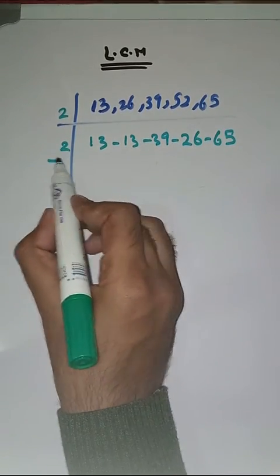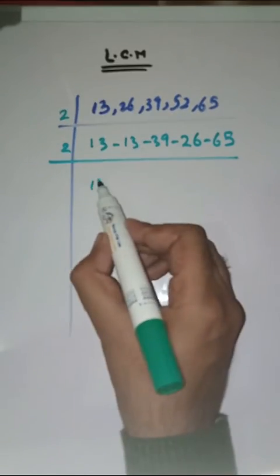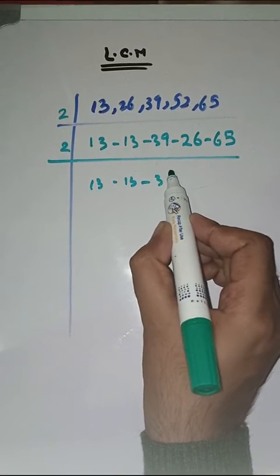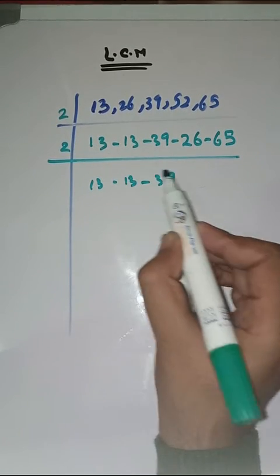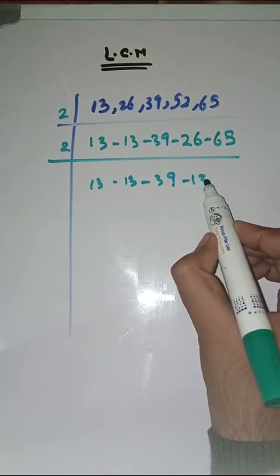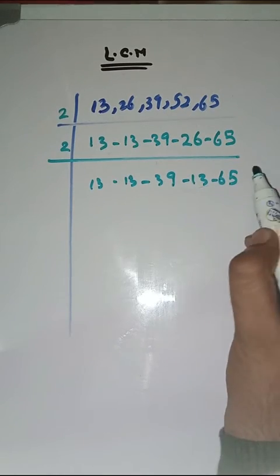Again with 2. 13 as it is. 13 as it is. 39 as it is. 2, 1s are 2. 2, 3s are 6. 65 as it is.